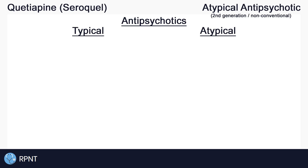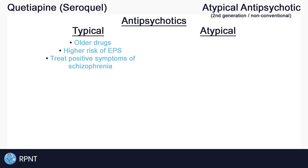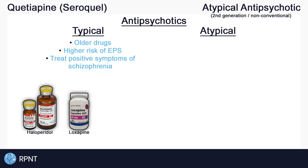Antipsychotics can either be typical or atypical. Typical antipsychotics are sometimes referred to as first-generation or conventional antipsychotics, and are used in the treatment of psychosis and behavioral problems. They are the older drugs which can be highly effective but generally have a high risk of causing side effects, especially extrapyramidal symptoms, or EPS. We'll talk more about EPS later on.